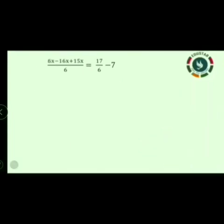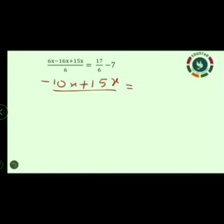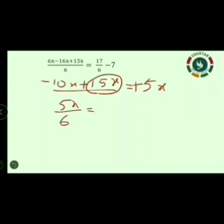Now: 6x minus 16x plus 15x, all divided by 6, is equal to 17 by 6 minus 7. We simplify the like terms on the left. 6x minus 16x — different signs, so subtraction — gives minus 10x. Then minus 10x plus 15x — different signs, greatest number is 15x — gives plus 5x. So 5x by 6 is equal to 17 by 6 minus 7. Since 7 has denominator 1, we apply cross multiplication: denominator becomes 6 into 1 = 6, numerator becomes 17 into 1 minus 7 into 6.